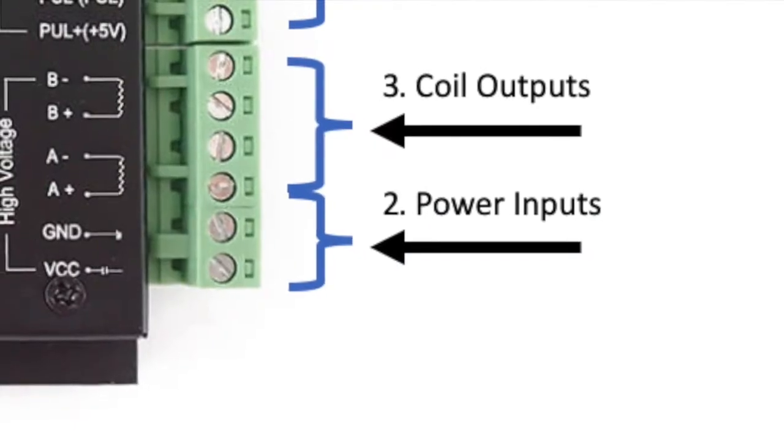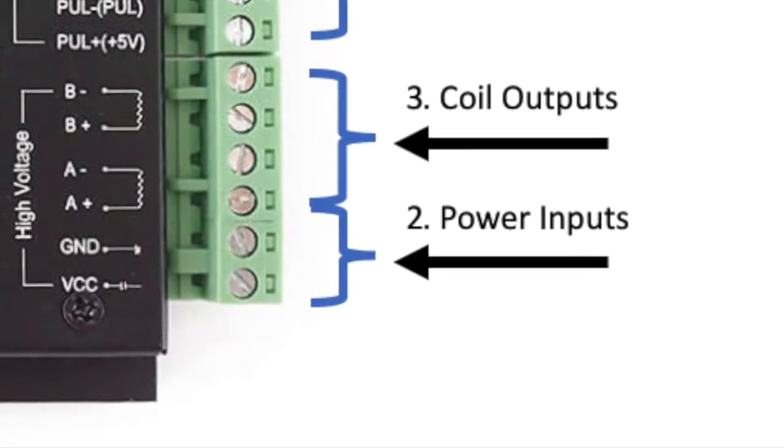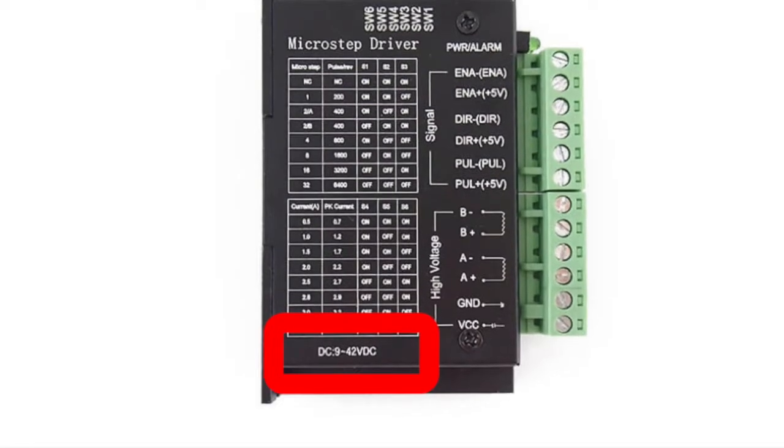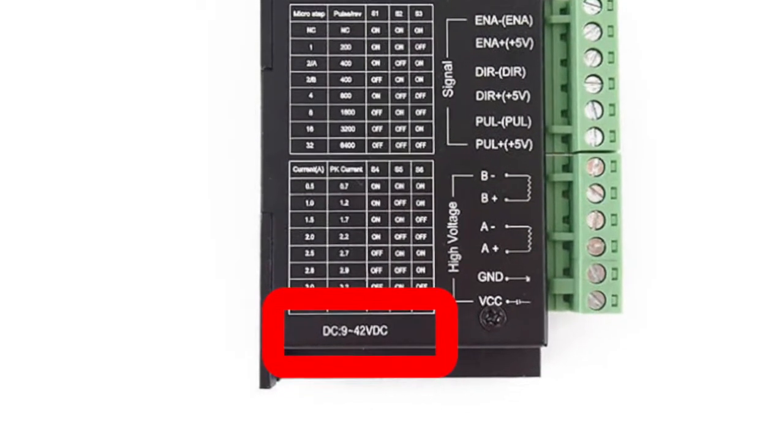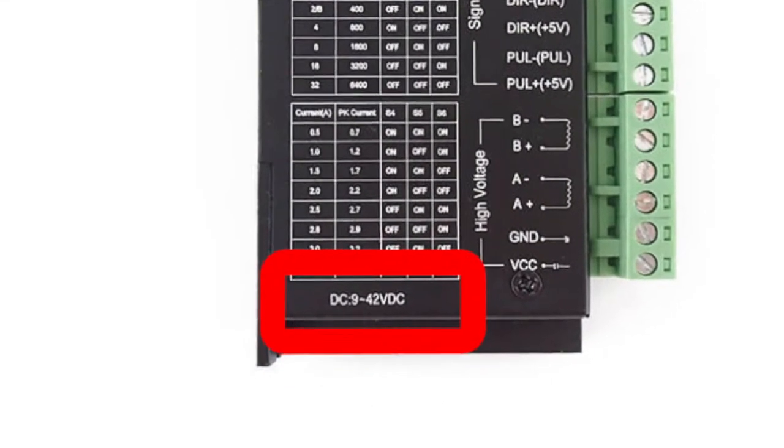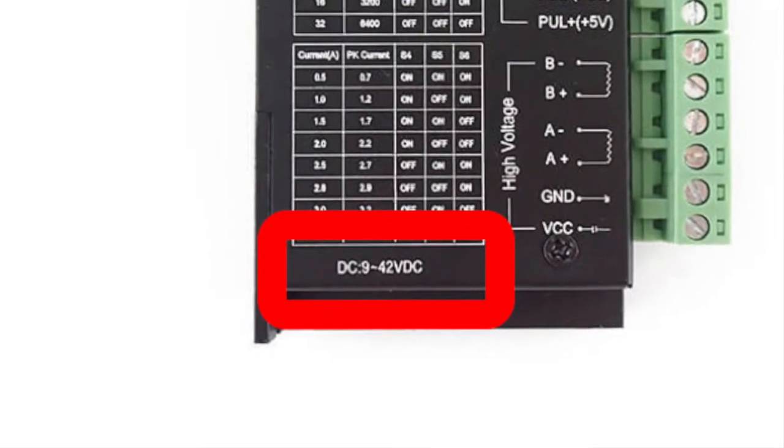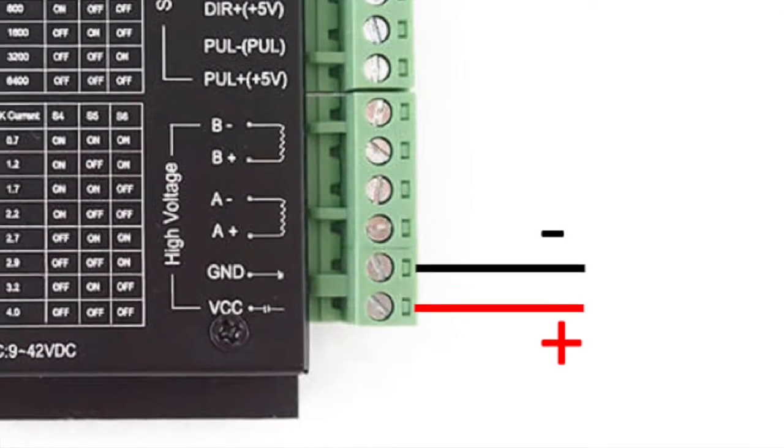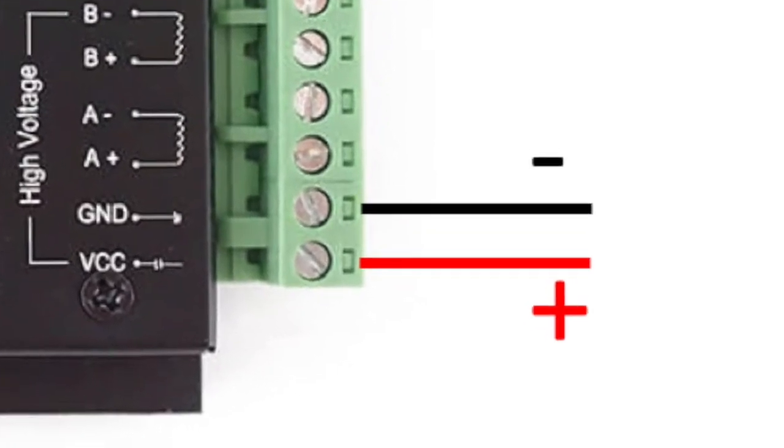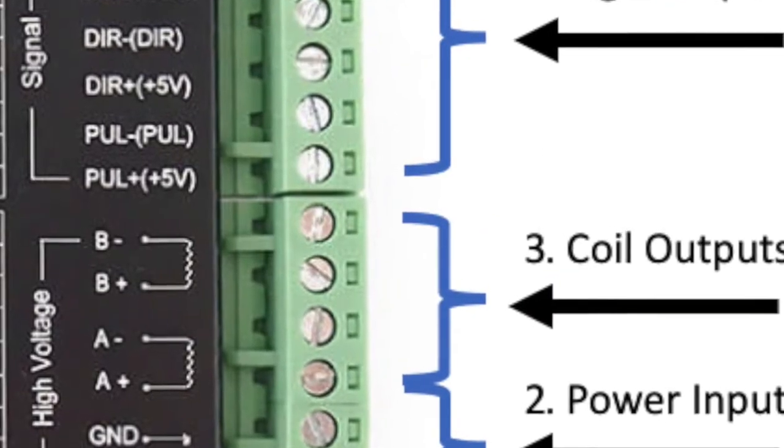The second part of the microstep driver is the power supply. Some microstep drivers allow for AC voltage along with DC voltage, but many use only DC. Tie the negative into the ground and the positive into the DC plus.